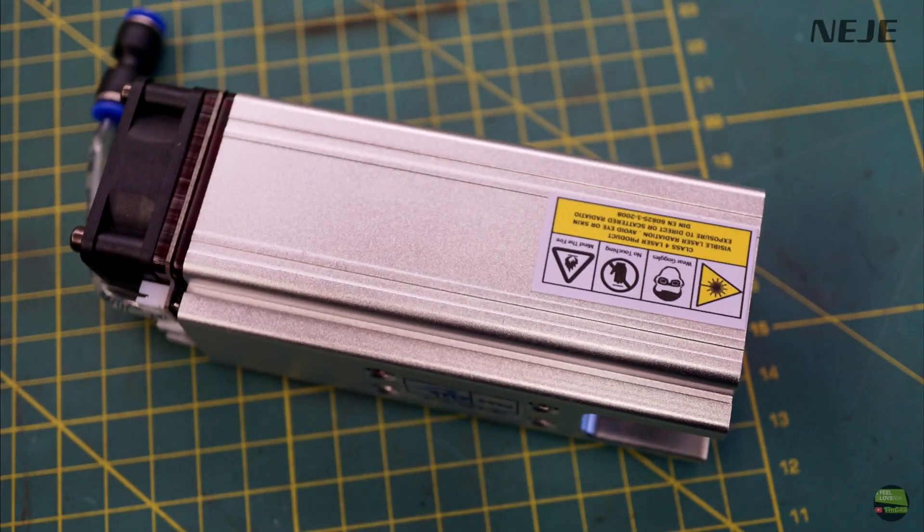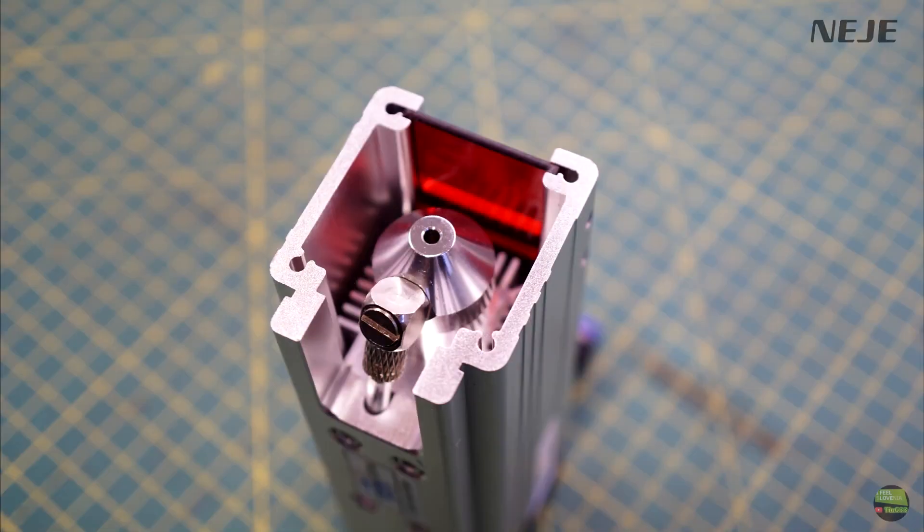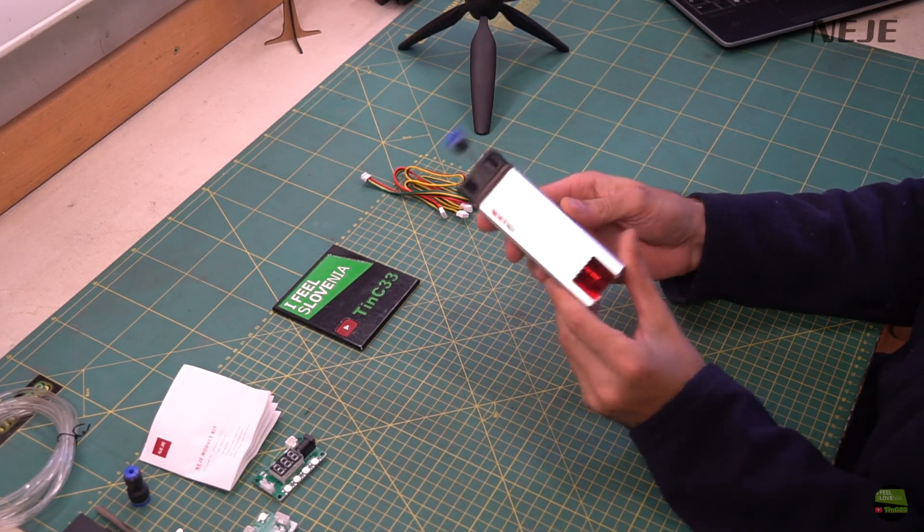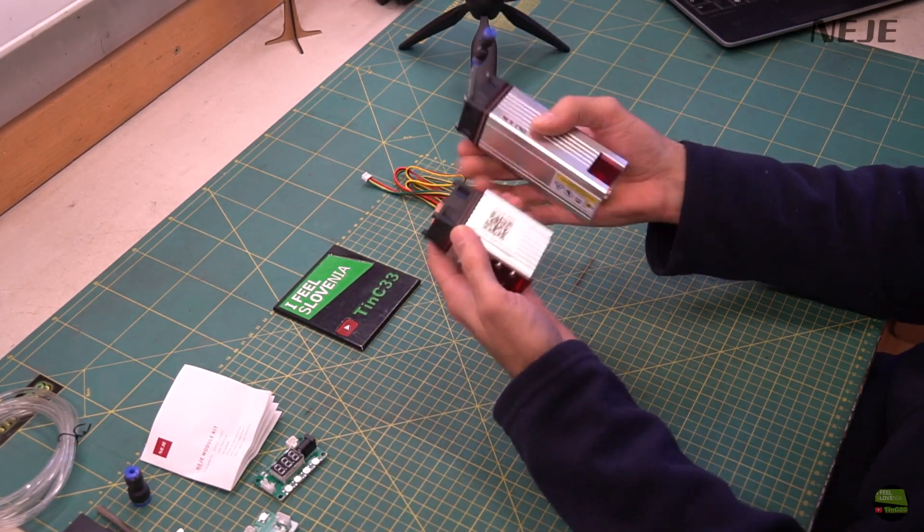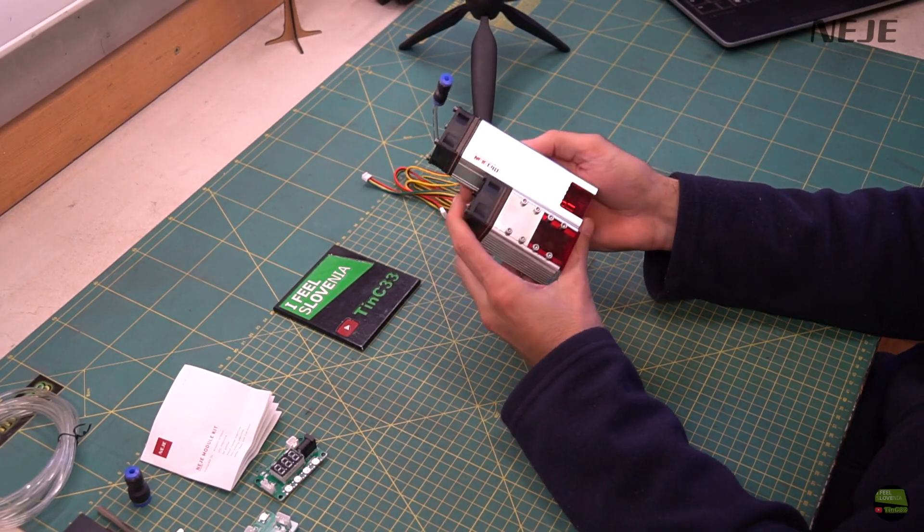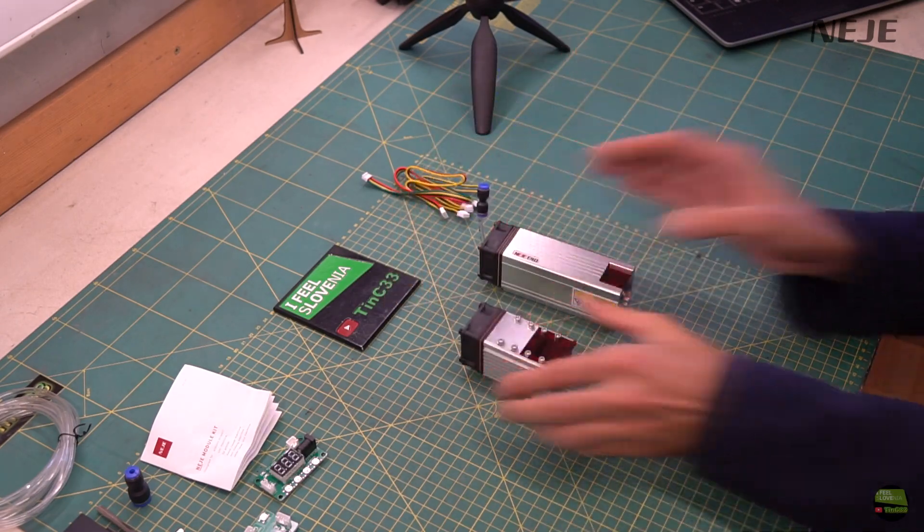E40 model is designed for cutting, same as A4640, but E40 got better limitation of power so the power is more constant and won't go over 11W of optical power. Besides that, cooling of the diode is much better, so that model can handle long term cutting. Because the laser is quite equal to A4640, I will make some kind of comparison in this video.